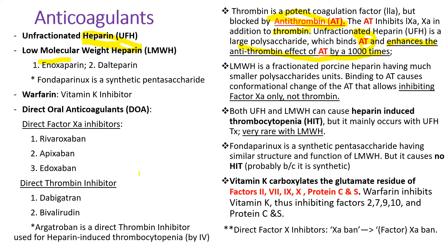Low molecular weight heparin is a fractionated porcine heparin having much smaller polysaccharide units, usually less than 18. Binding to antithrombin causes a conformational change that allows inhibiting factor 10a only, not thrombin. There are several commercially available drugs: enoxaparin (trade name Lovenox) and dalteparin. Both unfractionated heparin and low molecular weight heparin can cause heparin-induced thrombocytopenia via IgG antibody against the heparin-platelet factor 4 complex, but it mainly occurs with unfractionated heparin and is very rare with low molecular weight heparin.